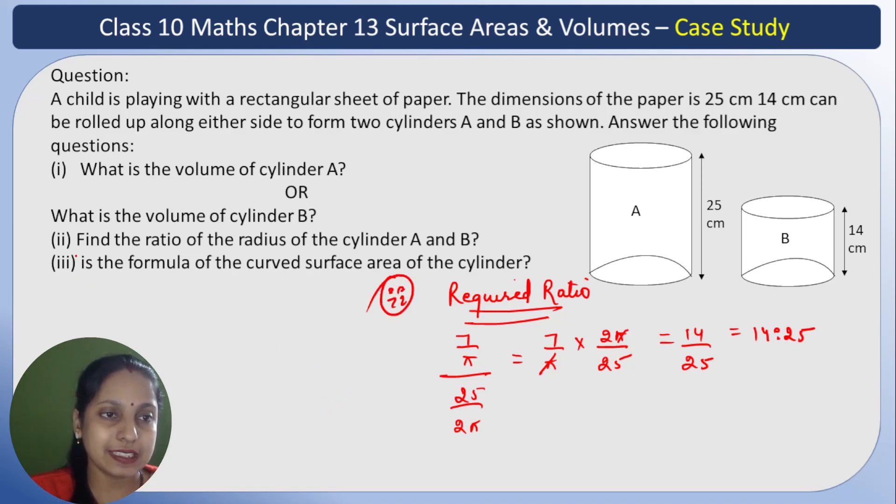Third part: what is the formula of curved surface area of the cylinder? The formula is 2πRH. There are separate videos with formulas uploaded on the channel - link is in the description.